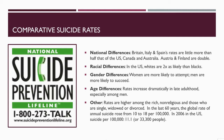In terms of national differences, Britain, Italy, and Spain's rates are a little more than half that of the United States, Canada, and Australia, while Finland's rates are double. Regarding racial differences in the United States, people who identify as white or Caucasian are two times more likely to attempt or commit suicide than people who are African American. Gender differences show women are more likely to attempt, but men are more likely to succeed. Age differences show rates increase dramatically in late adulthood, especially among young men.